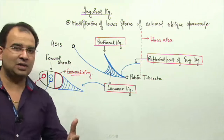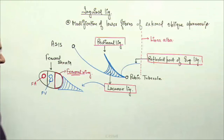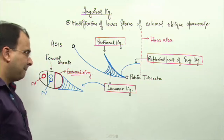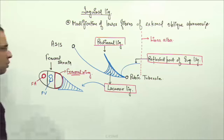The femoral canal contents, which we discussed in the lower limb, are the lymph node of Cloquet - a deep inguinal lymph node. So this is something about the inguinal ligament and its modifications. We will talk more about these modifications in relation to the inguinal canal. Let us now talk about the inguinal canal and then the rectus sheath.